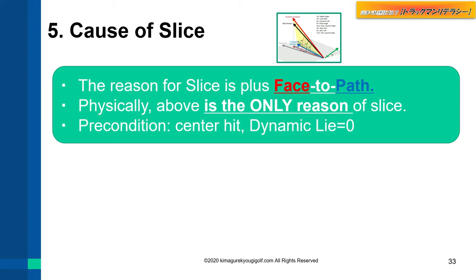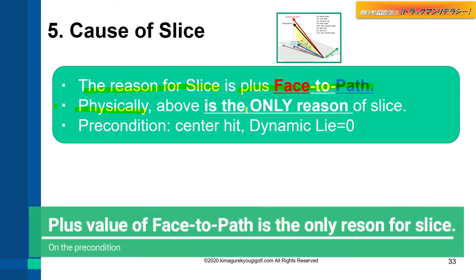Now we know face-to-path is the reason for curvature. So the reason for slice is a plus value of face-to-path. This point is important: physically, face-to-path is the only reason for slice. The only reason.